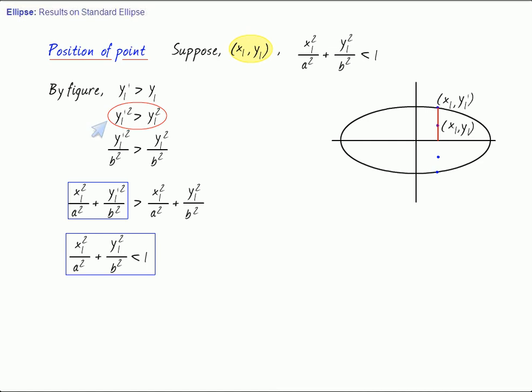So the position of a point with respect to the ellipse is completely determined by putting the point in the ellipse. If the result is less than 1, the point lies within the ellipse, and if it is greater than 1, it lies outside the ellipse.